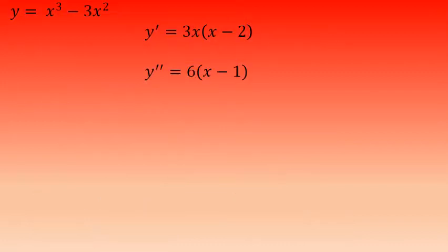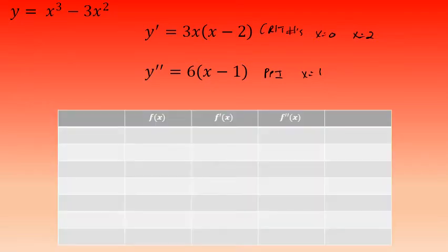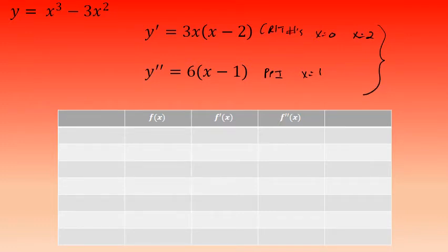We'll use those critical numbers and possible points of inflection to organize all the data about this curve into a table. The table includes five columns — the middle three labeled f of x, f prime of x, and f double prime of x. The rows are based on intervals created by the critical numbers and PPI: 0, 1, and 2, creating four intervals: negative infinity to 0, 0 to 1, 1 to 2, and 2 to infinity.